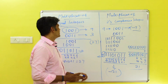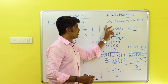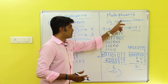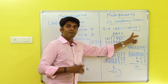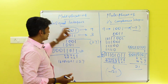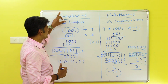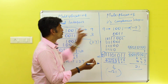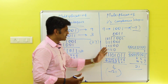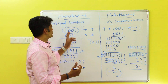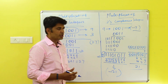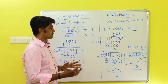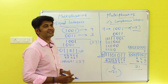This illustrates the complication between unsigned integer multiplication and two's complement multiplication. The same bit pattern 1001 represents 9 as unsigned and minus 7 in two's complement. Multiplying 9 × 3 as unsigned integers gives 27, but interpreting the same values as two's complement integers gives minus 21. To resolve this complication, you need to use Booth's algorithm, which is designed to handle this kind of multiplication correctly.